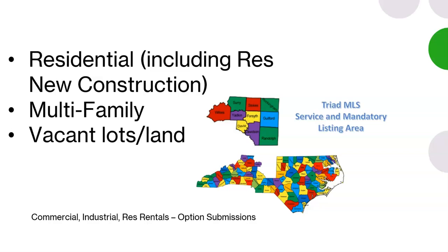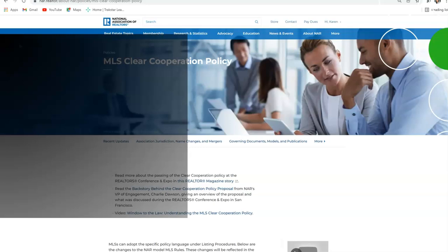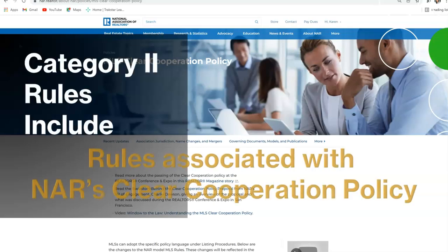The primary counties are: Wilkes, Surrey, Yadkin, Davie, Stokes, Forsyth, Davidson, Rockingham, Guilford, and Randolph. Category 2 rules include the mandatory National Association of Realtors Clear Cooperation Policy. You can read the entire policy along with the NAR guidelines and frequently asked questions on the NAR website.